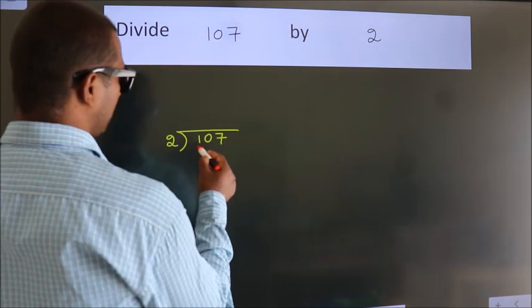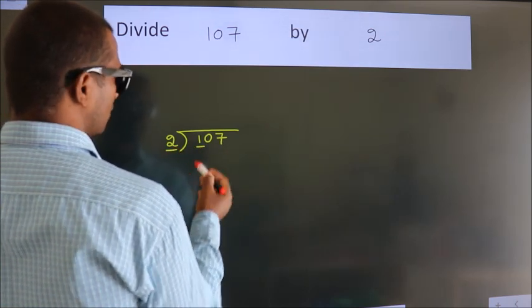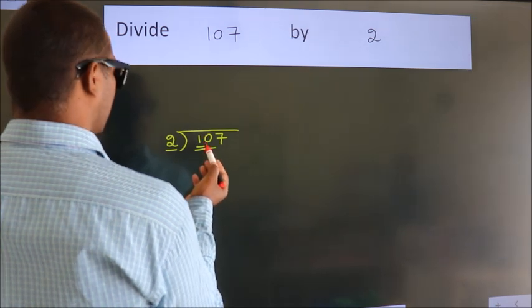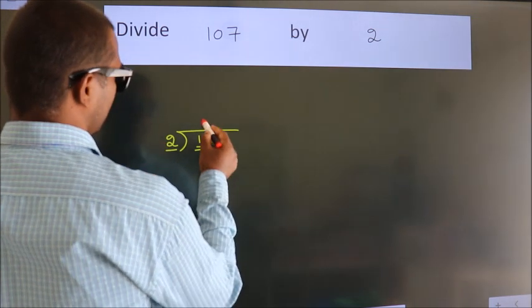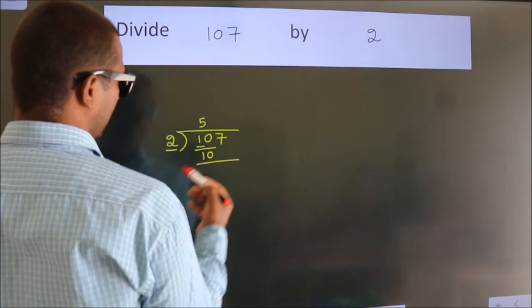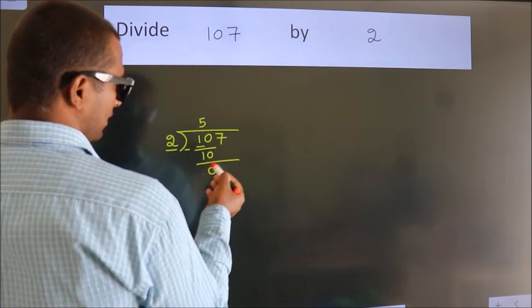Here we have 1, here 2. 1 is smaller than 2, so we should take 2 numbers: 10. When do we get 10 in the 2 table? 2 times 5 is 10. Now we subtract and get 0. After this,